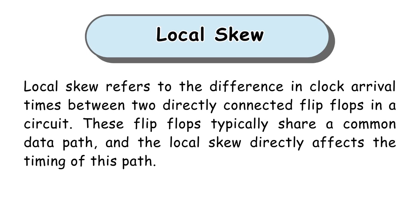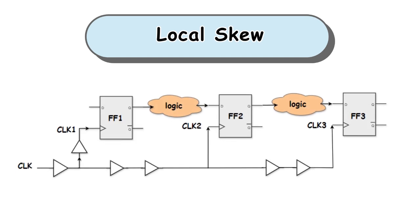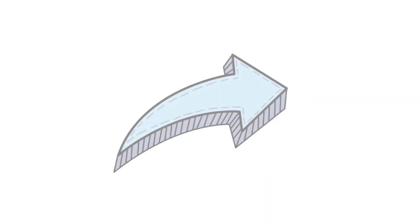Local skew refers to the difference in clock arrival times between two directly connected flip-flops in a circuit. These flip-flops typically share a common data path, and the local skew directly affects the timing of this path. For example, flip-flop 1 and flip-flop 3 are in the same data path. Therefore, the difference in clock arrival times between them is a local skew. Now let's see another classification of clock skew.